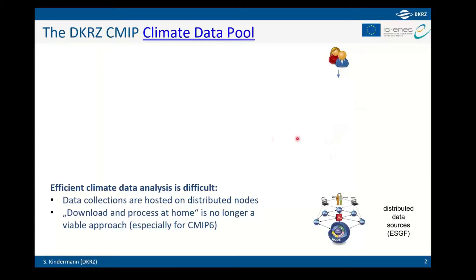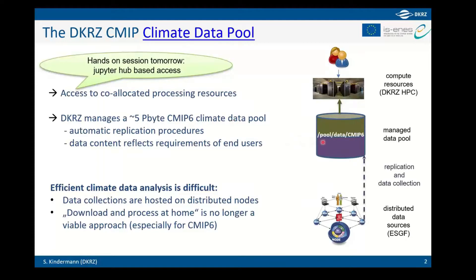What we did at DKRZ is essentially to allocate a large data pool, accessible under /pool/data/cmip6. This is a 5-petabyte dedicated pool to host CMIP6 data. We have automatic ingestion procedures to get all the data you need into this pool, reflecting the requirements of end users. CMIP6 is now at least 10 petabytes, so the 5-petabyte pool is a limitation.